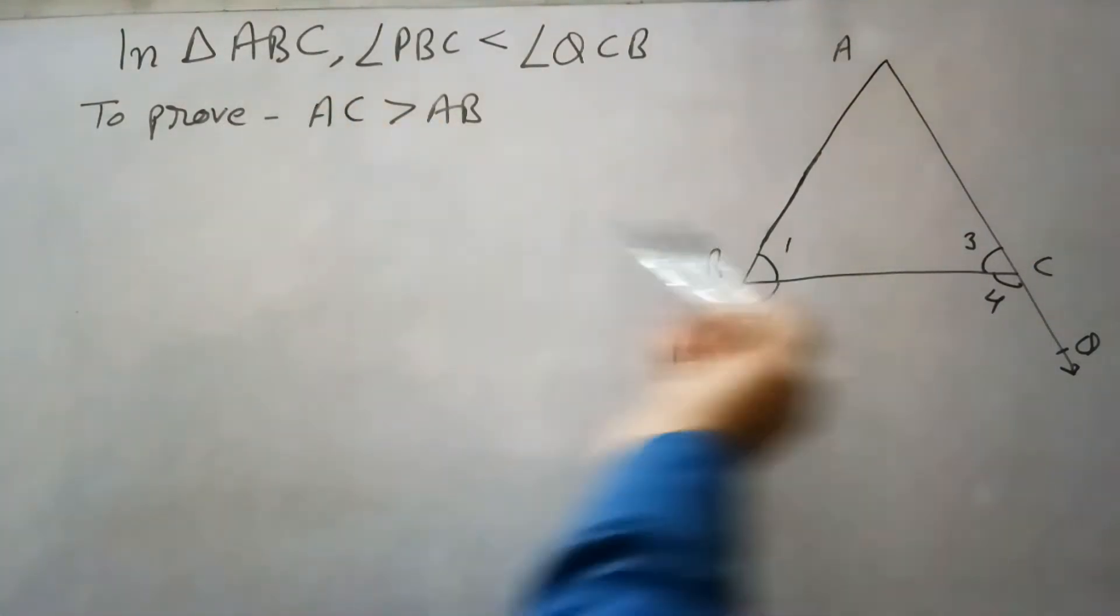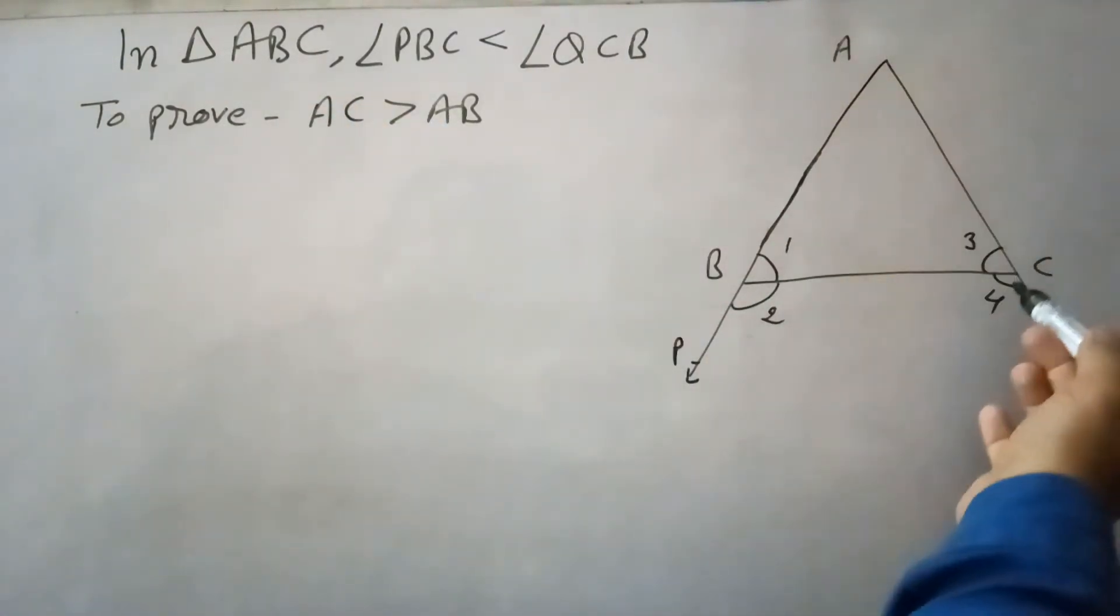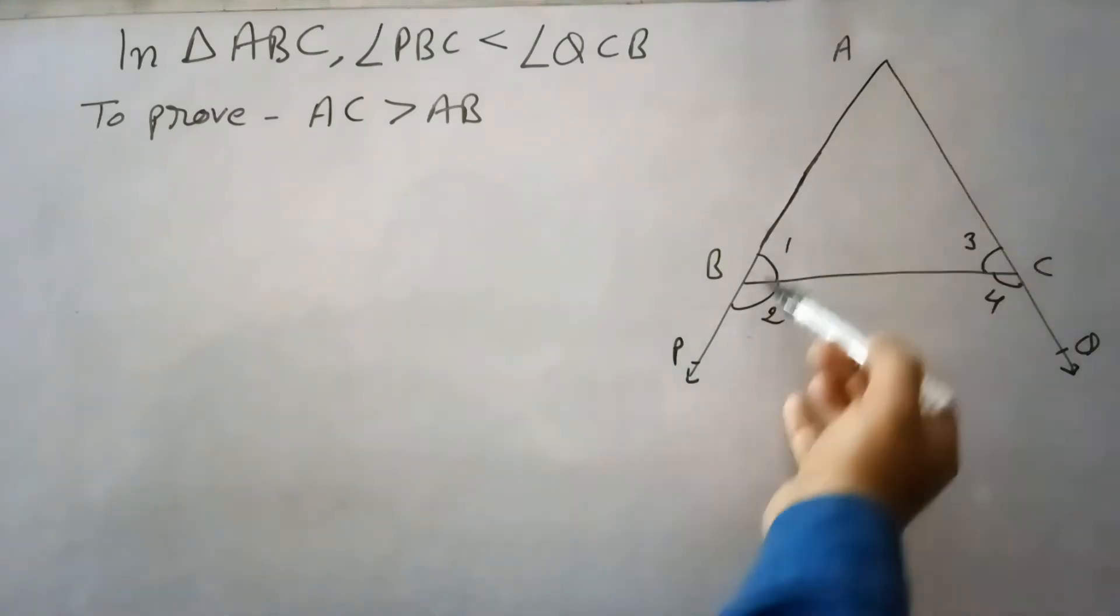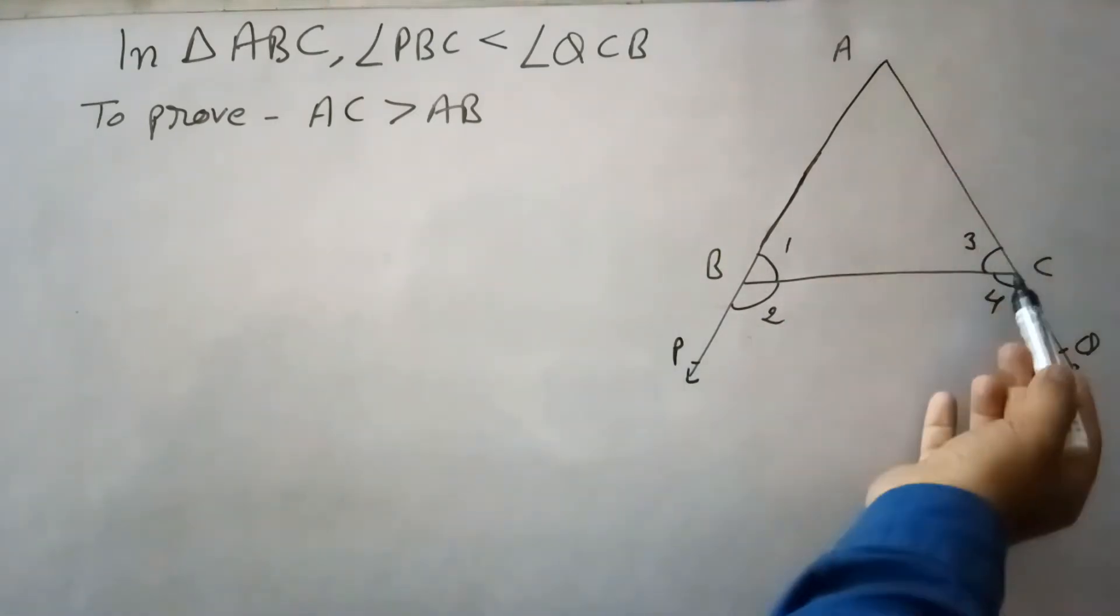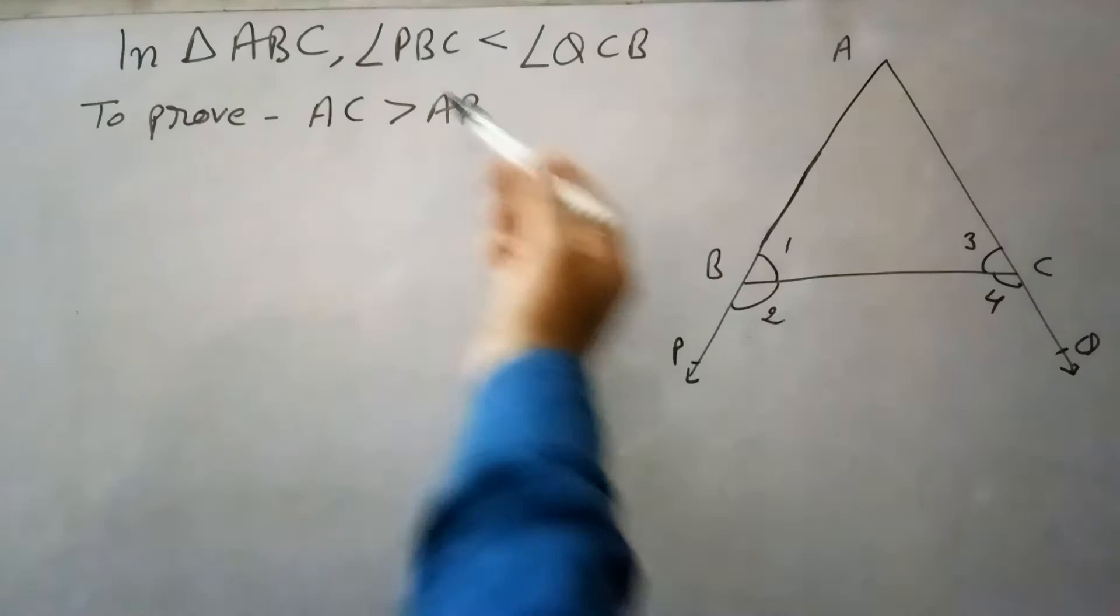In this question, in triangle ABC, AB is extended to point P and AC is extended to point D.